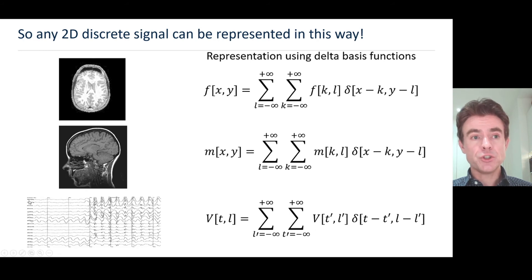We've got different electrode numbers here and time in this dimension to give us voltage as a function of time and electrode. That 2D array of values, 2D signal, would again be represented by a weighted set of delta functions.